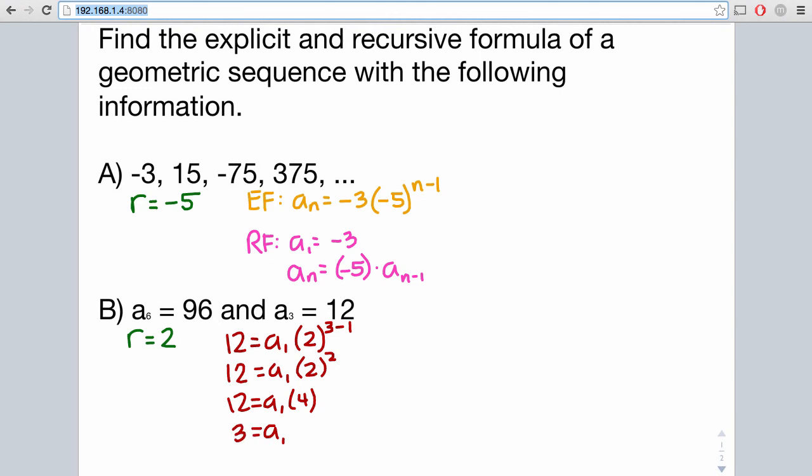So then the explicit formula will follow. A sub n equals your first term, which is 3, times your common ratio to the n minus 1 power.